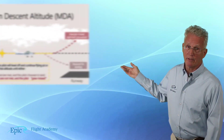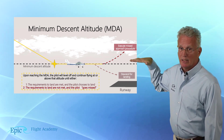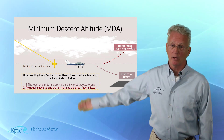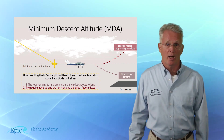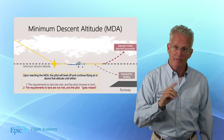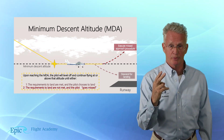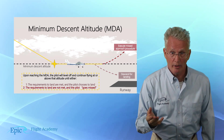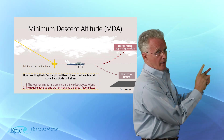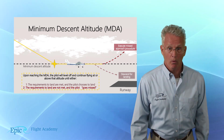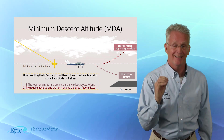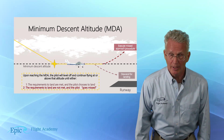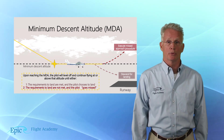Looking at our graphic, the aircraft is guided laterally down to a minimum descent altitude. Upon reaching the MDA, the pilot levels off and continues flying at or above that altitude until one of two things happens: number one, the pilot sees they have met the requirements of 91-175 and can land the aircraft; or number two, if those requirements are not met, the pilot will initiate the missed approach at the missed approach point.